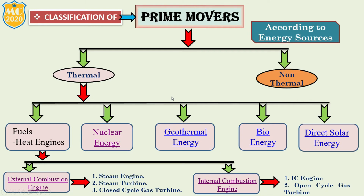Second is geothermal energy. Geothermal power plants are used to generate electricity. The heat from within the earth is used to generate electricity by the use of geothermal energy. Sometimes hot water or steam is extracted from the earth through a series of wells to create power.